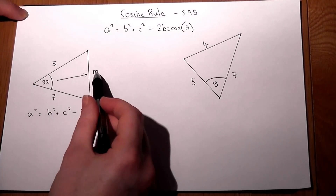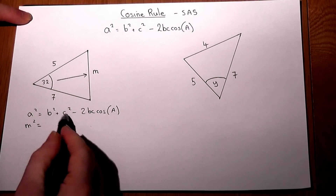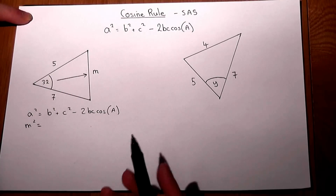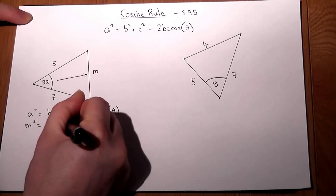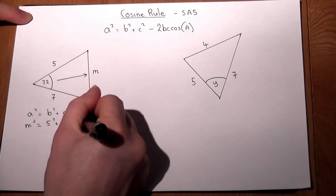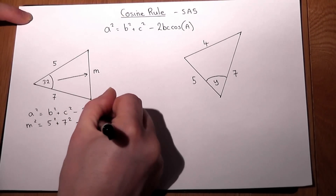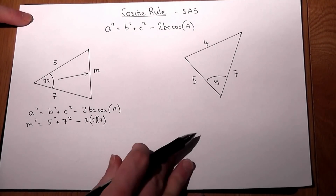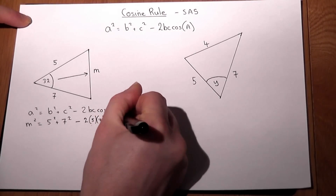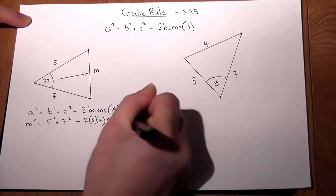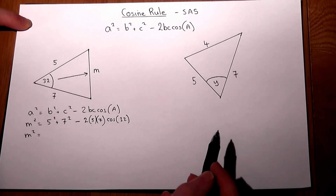A is always the side opposite the angle, so M squared, and B and C are the other two sides. It does not matter which way round you have B and C. So we'll have five squared plus seven squared, then take away two lots of five and seven, and the angle enclosed between the two known sides is cos of 32. To work out M squared you just input that formula into your calculator.